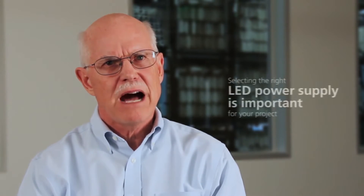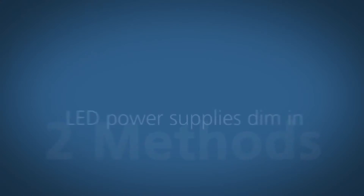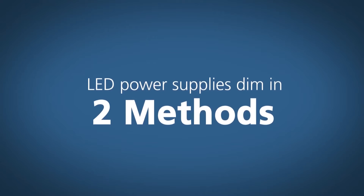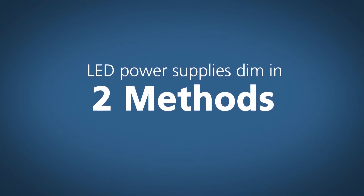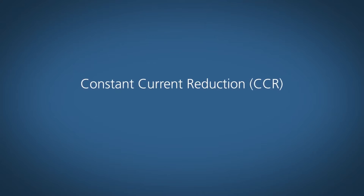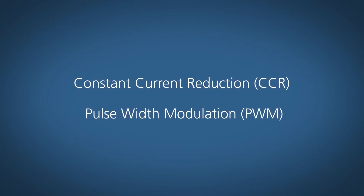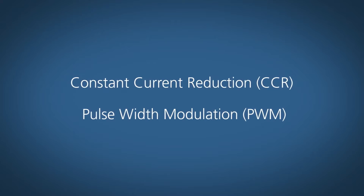This potential of having a strobe effect is why selection of the LED power supply is so important. LED power supplies dim in two different methods. One is called Constant Current Reduction, or CCR. The other method is called Pulse Width Modulation, or PWM.